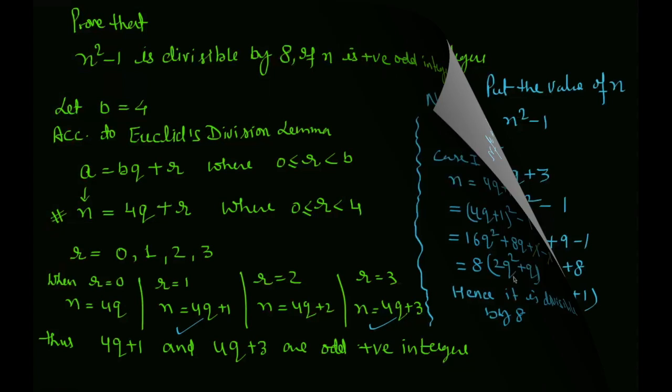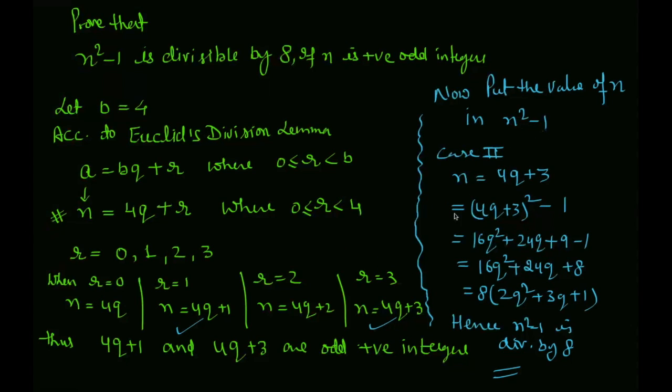Case 2, n square minus 1. We put the value 4q plus 3. So 4q plus 3 whole square minus 1. Open this using the identity a square plus b square plus 2ab.